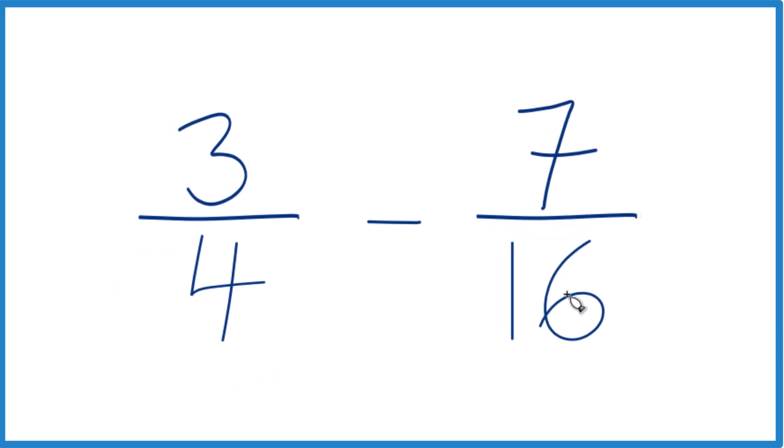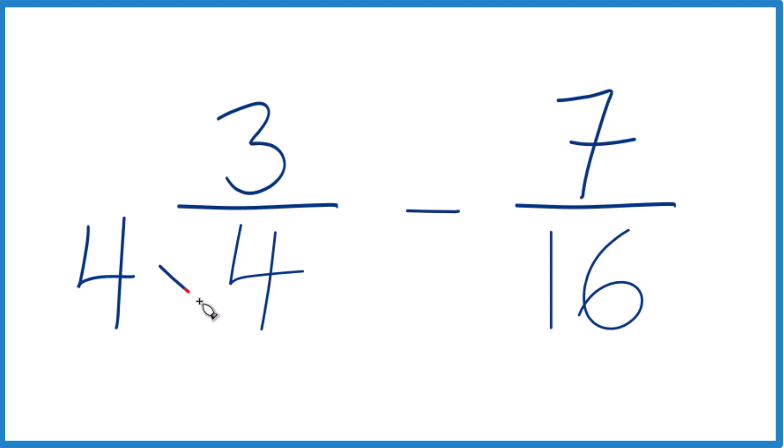4 goes into 16 four times. So if I said 4 times 4, that would be 16. I'd have 16 here and here. Everything would be good.